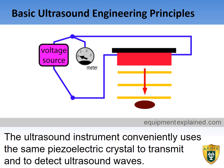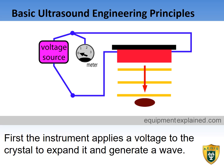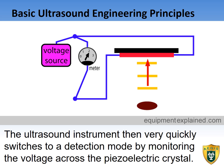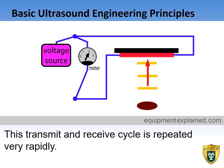The ultrasound instrument conveniently uses the same piezoelectric crystal to transmit and detect ultrasound waves. First, the instrument applies a voltage to the crystal to expand it and generate a wave. Then, the ultrasound instrument very quickly switches to a detection mode by monitoring the voltage across the piezoelectric crystal. This transmit and receive cycle is repeated very rapidly.